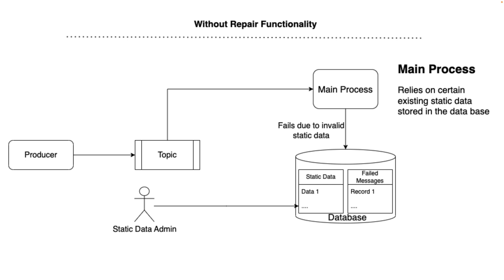Let's see what our process is doing and how we are going to make it auto repair failed messages. Currently, without the repair functionality, a producer is producing some events to a topic and the main process is consuming from that topic. The main process is doing some validation based on static data which is already present in the database.